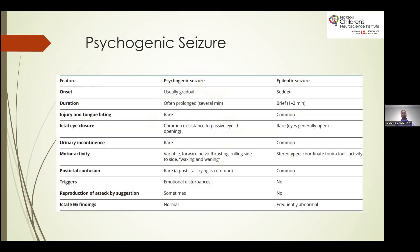Features that differentiate psychogenic seizures from epileptic seizures include: gradual onset, prolonged duration of several minutes, rarely causing injury such as head trauma or tongue biting from a fall. The most common feature is ictal eye closure, sometimes with resistance to passive eyelid opening. Rare incontinence, and motor activity including forward pelvic thrusting, rolling side to side with changing movements, and a waxing-and-waning arrhythmic pattern. They rarely have post-ictal confusion.